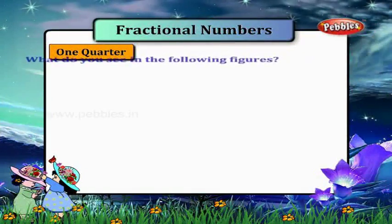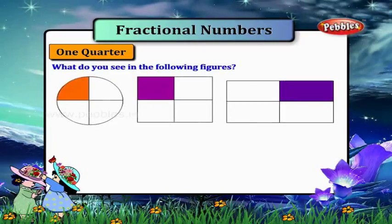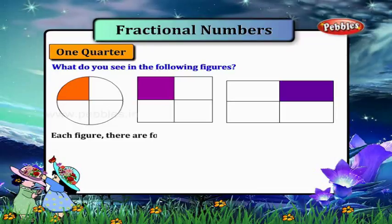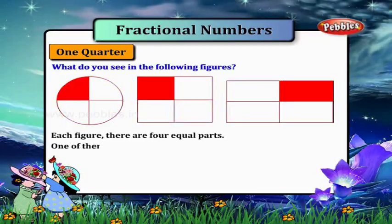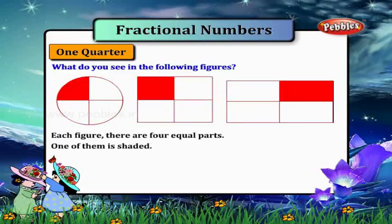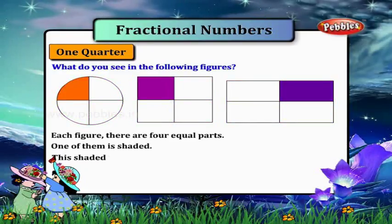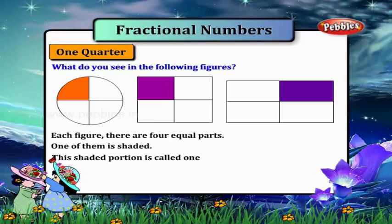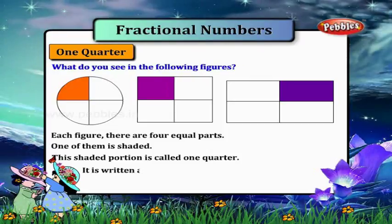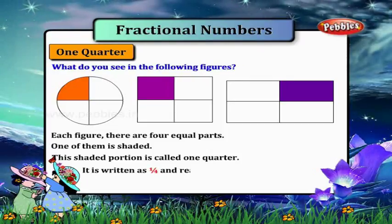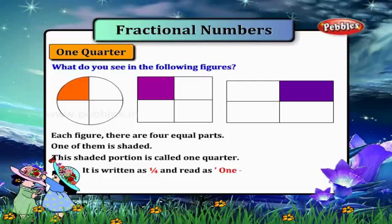What do you see in the following figures? In each figure, there are four equal parts, and one of them is shaded. This shaded portion is called one quarter. It is written as one by four and read as one fourth.